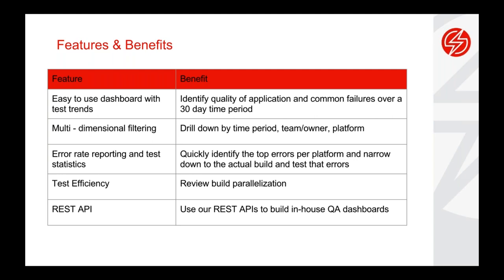We provide multi-dimensional filtering, which means you can slice and dice your data by different time periods, by different teams or a specific owner within the team, or by platforms like a specific operating system, simulator or emulator versions, or specific browsers. And we have error rate and test statistics — not only do you get an overview of how your test quality looks, but you can also understand the number of tests failing by specific error type, and go from a high-level view of the error type into the actual test itself. I'll show you that shortly in the demo.